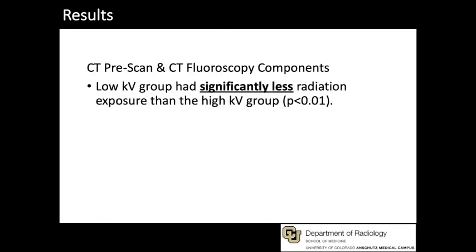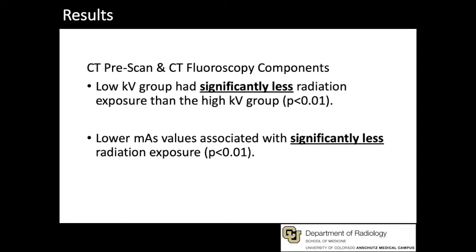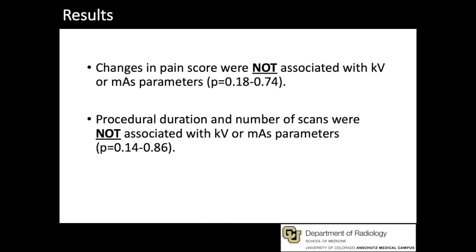For both the CT pre-scan and procedure components, the low KV group had significantly less radiation exposure than the high KV group. There was also significantly less radiation exposure to subjects with lower MAS value. In terms of outcomes, changes in pain score, procedure duration, or number of scans were not associated with KV or MAS parameters.